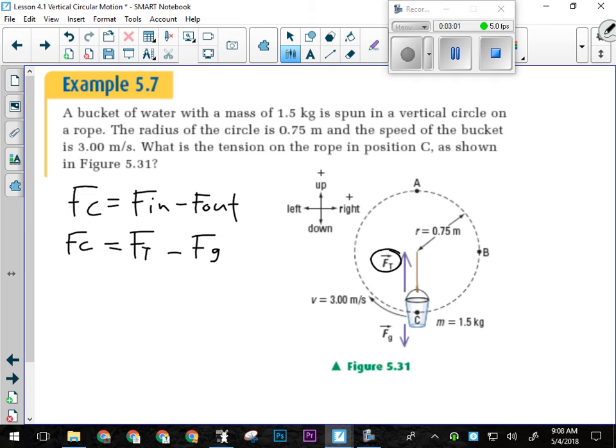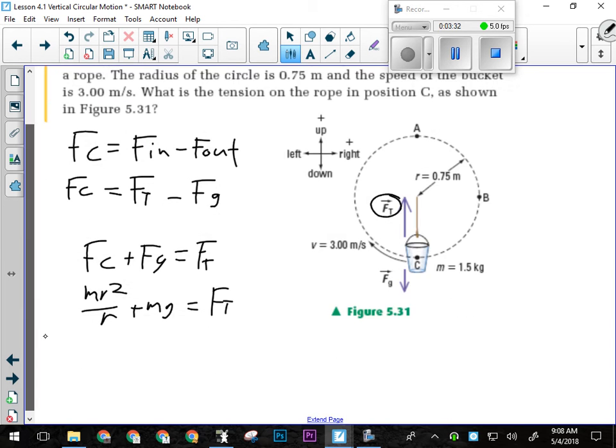So what we're looking for is the tensional force. What do I have to do with gravity if I want to get tensional force by itself? Add it over to the other side. And that makes sense, because this force has to be bigger than these two, right? It's the one that's pulling in. If it's going to make the net force FC in, it's got to be bigger. So FC plus FG equals the tensional force in the rope. So we got MV squared over R plus M times G is going to give us our tensional force.